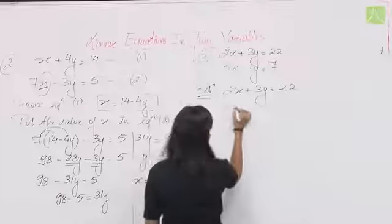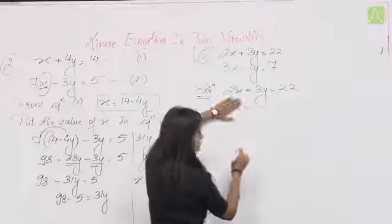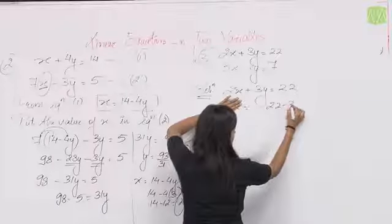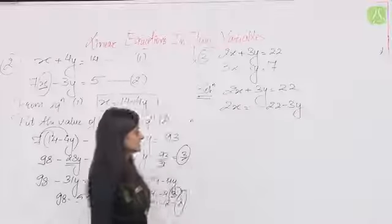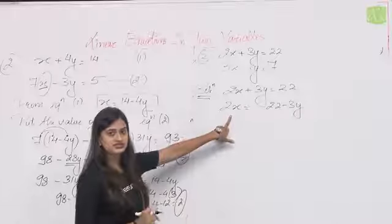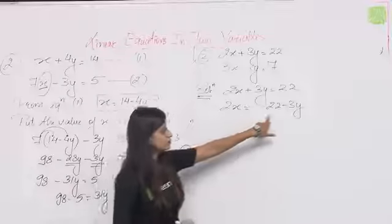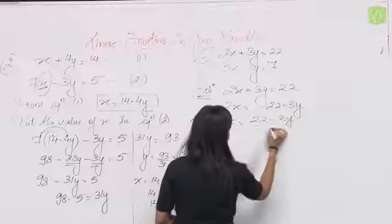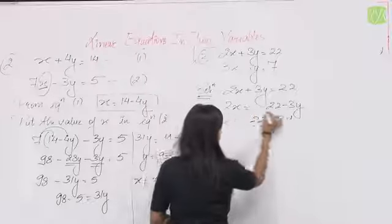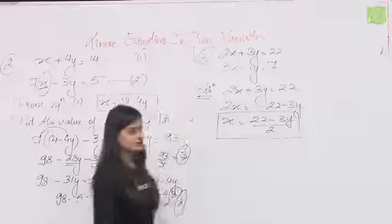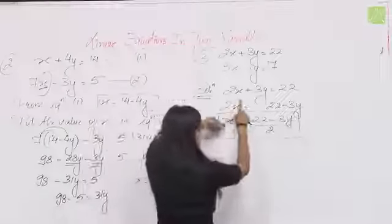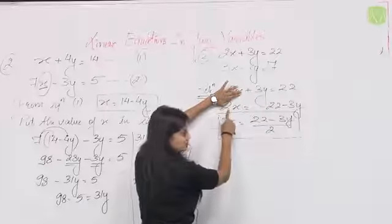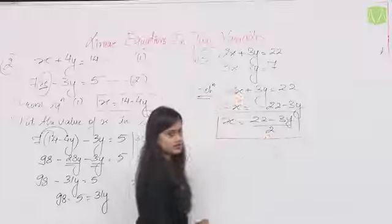First equation: 2x + 3y = 22। x की value find करते हैं: 2x = 22 − 3y, so x = (22 − 3y)/2। यह x की value निकाली in terms of y।